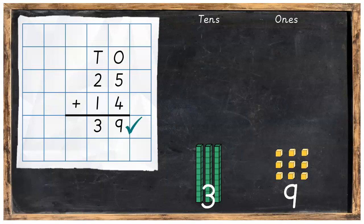Well done. And that's the final answer. You should have three tens and nine ones in your Dienes blocks and you should have 39, three tens and nine ones, on your sum.